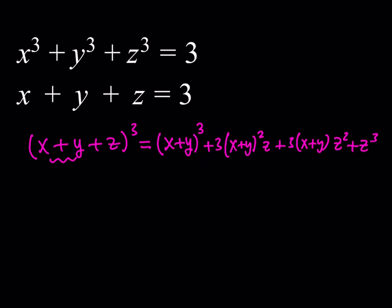So we get: x plus y quantity cubed, plus 3 times x plus y squared times z, plus 3 times x plus y multiplied by z squared, and finally z cubed. This just gives you this expression because if you were cubing a plus b, you'd write a cubed plus 3a squared b plus 3ab squared plus b cubed. But we want to write it in a smarter way, so let's expand this a little bit.